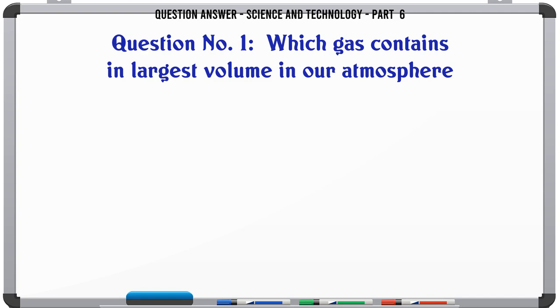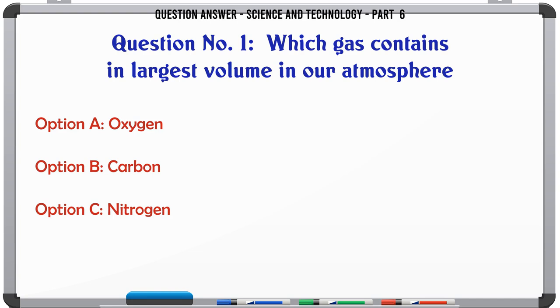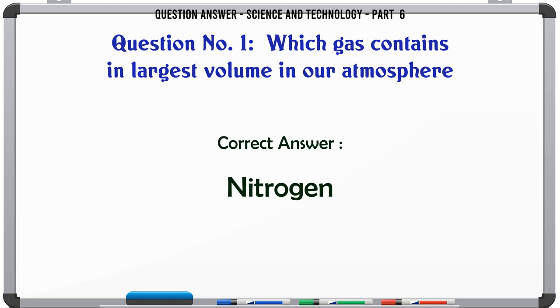Which gas contains in largest volume in our atmosphere? A. Oxygen. B. Carbon. C. Nitrogen. D. Argon. The correct answer is Nitrogen.